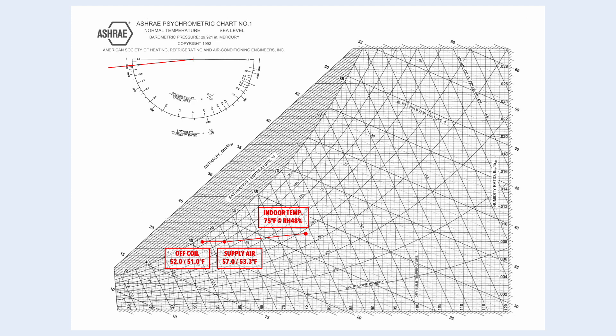So, once our off-coil temperature is established, we can pull the line to the enthalpy side and we found that the enthalpy of the off-coil is 20.9 BTU per pound.